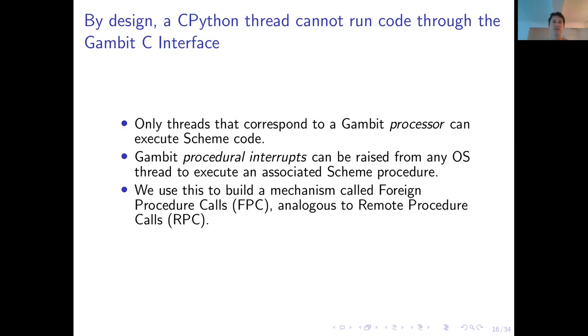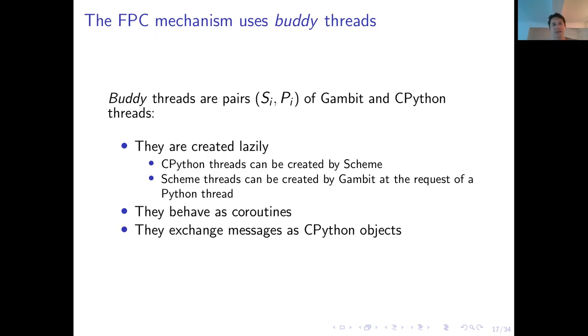To solve this, Gambit has procedural interrupts that can be raised from any OS thread and what this does is that it sets the scheduler to execute an associated Scheme procedure. Now, we use this to build a mechanism called Foreign Procedure Calls and this is quite analogous to Remote Procedure Calls. This mechanism relies on what we call Buddy Threads. These Buddy Threads are pairs (S_i, P_i) of Gambit and CPython threads. In this case, the ith S thread is the ith Scheme thread and the same for the ith Python thread. These are always created lazily and it's symmetrical. So CPython threads can be created by Scheme and Scheme threads can be or the creation of Scheme threads can be requested through a message by any Python thread. And these two threads, this pair behave as coroutines and they exchange messages exclusively as CPython objects.